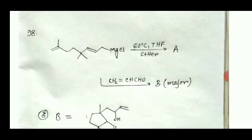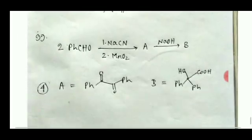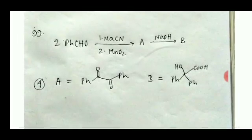For question number 98, an intramolecular cyclization occurs at 60 degrees Celsius. Product A then attacks the aldehyde in a 1,2-addition, because the aldehyde is sterically free and reactive. Option 3 — product B — is the correct answer.